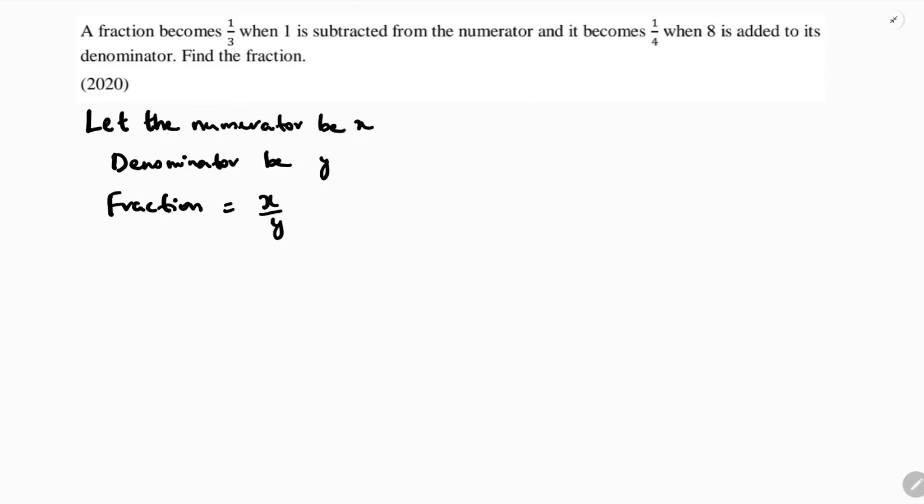Now if I will read again the question, a fraction becomes 1 by 3 when 1 is subtracted from numerator. If 1 is subtracted from numerator it becomes 1 by 3. So if we will cross multiply, 3 times x minus 1 equals y. So 3x minus 3 equals y. So 3x minus y equals 3. This is equation 1.